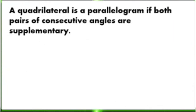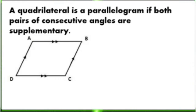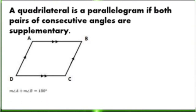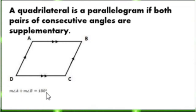Third condition: a quadrilateral is a parallelogram if both pairs of consecutive angles are supplementary. We have here quadrilateral ABCD. The measurement of angle A plus the measurement of angle B is equal to 180 degrees.